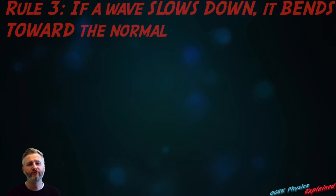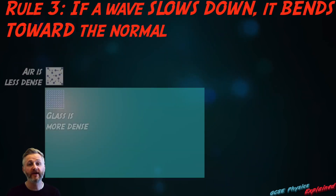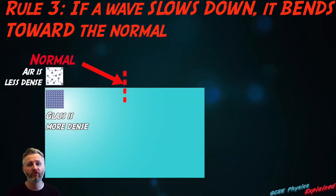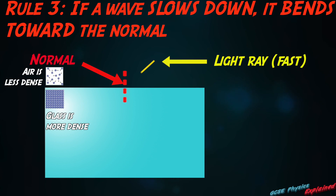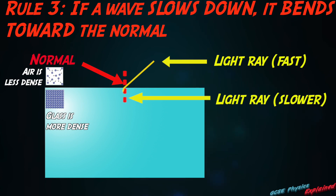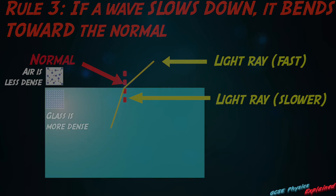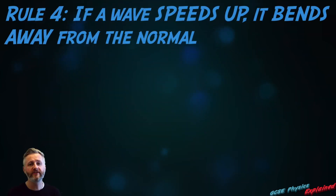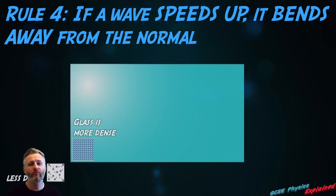Rule three: if a wave slows down, it bends toward the normal. Rule four: if a wave speeds up, it bends away from the normal.